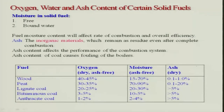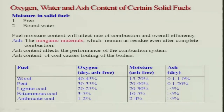Looking at typical solid fuels — wood, peat, lignite coal, bituminous coal, anthracite coal — their constituents vary considerably in terms of oxygen, carbon, and ash content. Wood has high moisture and relatively high oxygen content, while anthracite coal has very little ash. However, Indian coals can have 20 to 40 percent ash content, which is a major challenge for utilizing our vast coal reserves.